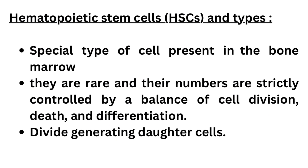Hematopoietic stem cells are a special type of cell present in the bone marrow. They are rare and their numbers are strictly controlled by a balance of cell division, death and differentiation. Hematopoietic stem cells divide generating daughter cells. Some daughter cells retain stem cell characteristics of the mother cell, with the property of self-renewing and the ability to give rise to all blood cell types. Other daughter cells differentiate into progenitor cells, losing their self-renewal capacity and giving rise to a particular blood cell lineage.